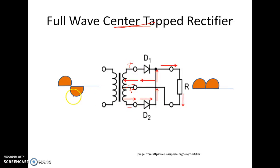In negative half cycle, D1 is off and D2 is on giving me a current through D2, load and back to the center.